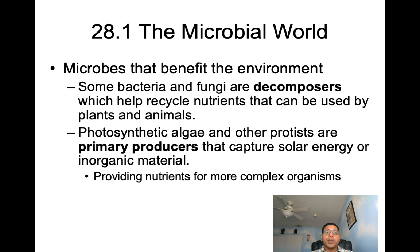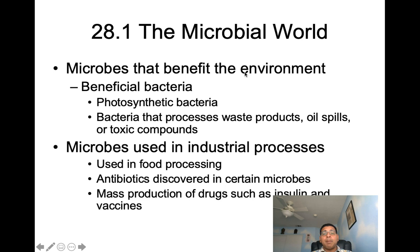When we talk about microbes that benefit the environment, some bacteria and fungi function as decomposers, and they help recycle nutrients that can be used by plants and animals. Photosynthetic algae and other producers are considered primary producers — they capture solar energy or inorganic material and provide nutrients for more complex organisms. Beneficial bacteria include photosynthetic bacteria and bacteria that process waste products, oil spills, or toxic compounds.